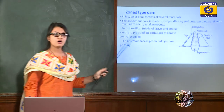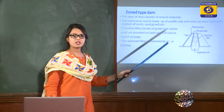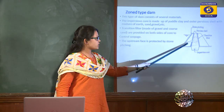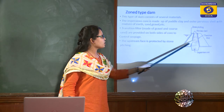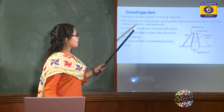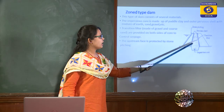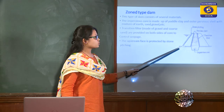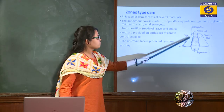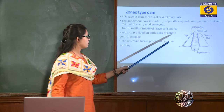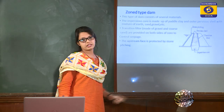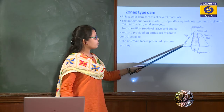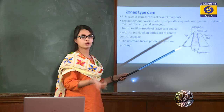The zoned type earthen dam has several zones and is made of more than one material. The central impervious zone is constructed of clay, which stops seepage through the dam body. It is surrounded by a pervious zone made of earth, sand, and gravel, which provides support to the core and transmits forces to the foundation. Transition filters made of gravel and coarse sand are provided between the pervious and impervious zones to control seepage and prevent soil movement through any cracks in the core. The central core also extends below the base of the dam to stop seepage from the sub-base.